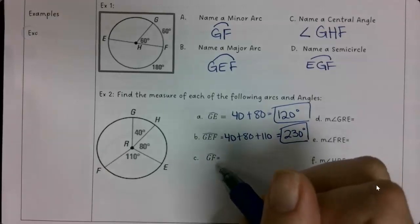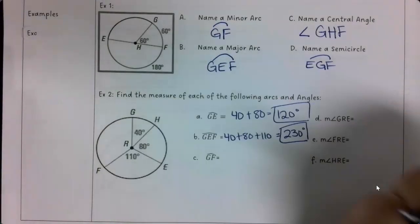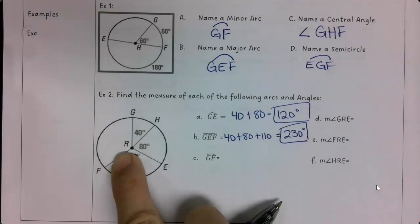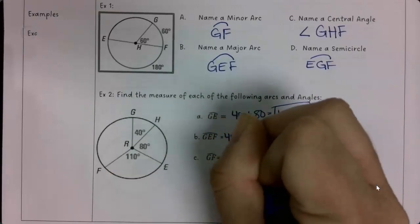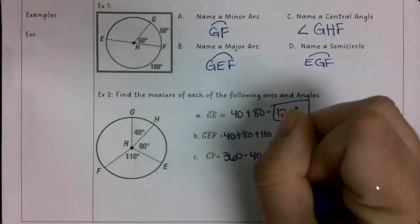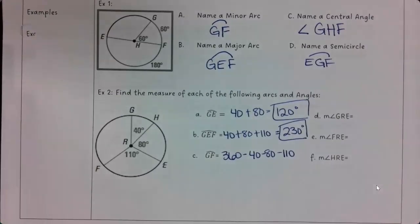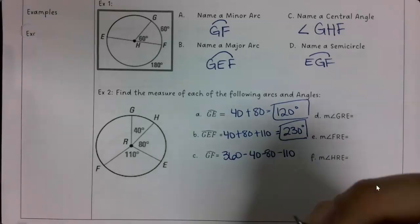Okay, the next one I have is GF. Because it's only two letters, I want the shorter distance. So I go from G to F. It's this part right here. I don't know what it is right now. I have to subtract from 360 because there's 360 degrees in a circle. And then I want to subtract all the other angles I do know. So I'm going to subtract 40, 80, and 110. 130.